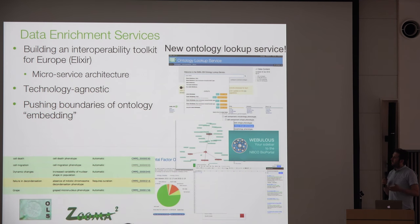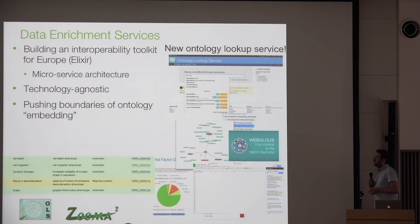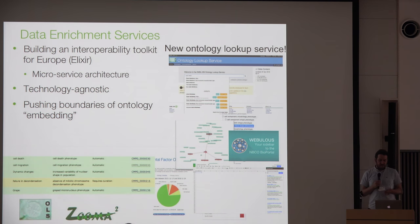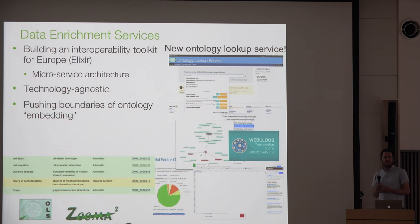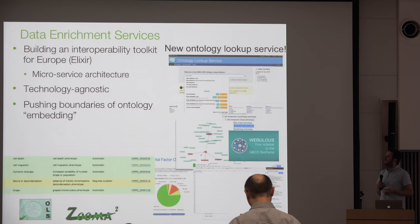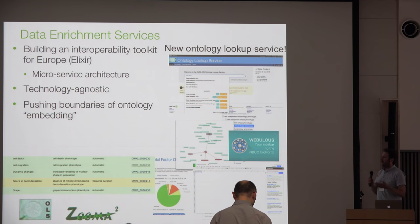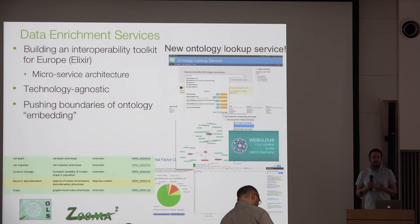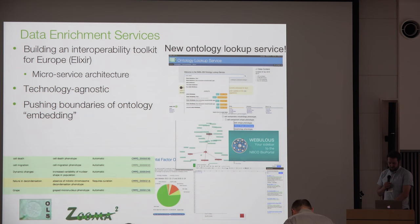We work in a technology-agnostic space because a lot of different technologies are used across services at the EBI. We have to think about how we get all this structured ontology content back into those services and how they exploit it in their own applications — for example, in the search interface to Pride or ArrayExpress, how can they make value of all this extra work that we're doing.